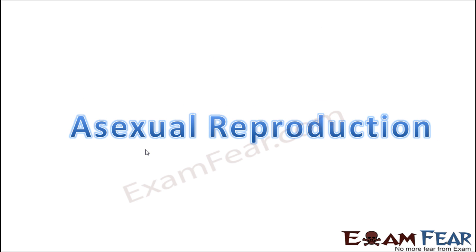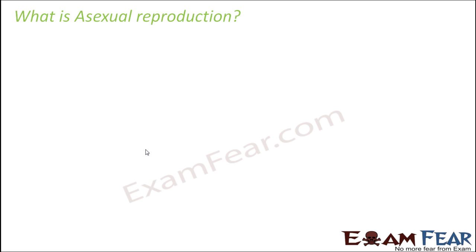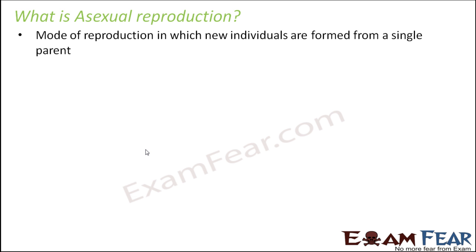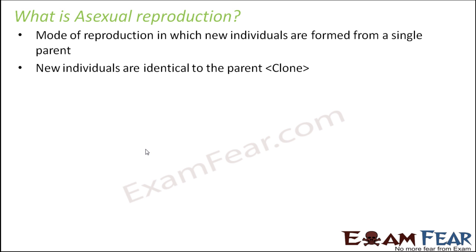Let us now talk about asexual reproduction. What is asexual reproduction? It is that mode of reproduction in which new individuals are formed from a single parent — we do not need a male and a female to fuse together. One individual alone can give rise to new organisms. The new organisms produced, often called daughter cells or daughter organisms, are exactly identical to the parent — morphologically and genetically identical — and that is why they are often called clones.